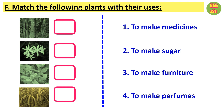In this worksheet, pictures of some plants are given and kids need to match them with their uses. In the first picture, we can see big trees used to make furniture, so kids write number 3. In the second picture, jasmine flowers are used to make perfumes, so kids write number 4. In the third picture, tulsi leaves are used to make medicines, so kids write number 1. In the last picture, sugarcane is used to make sugar, so kids write number 2.